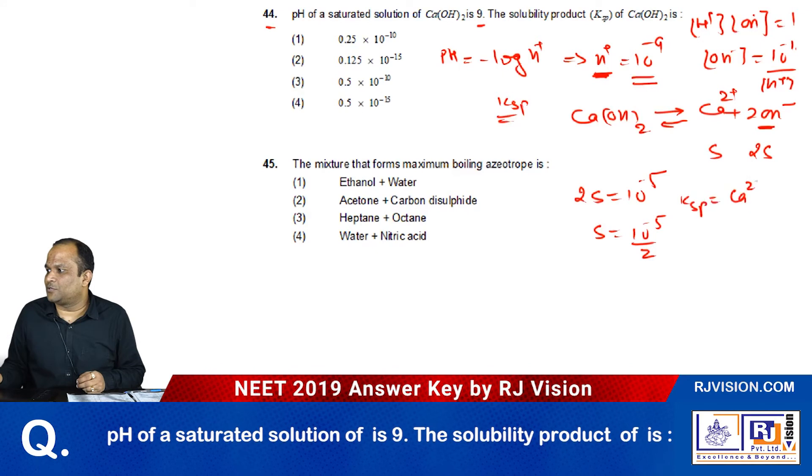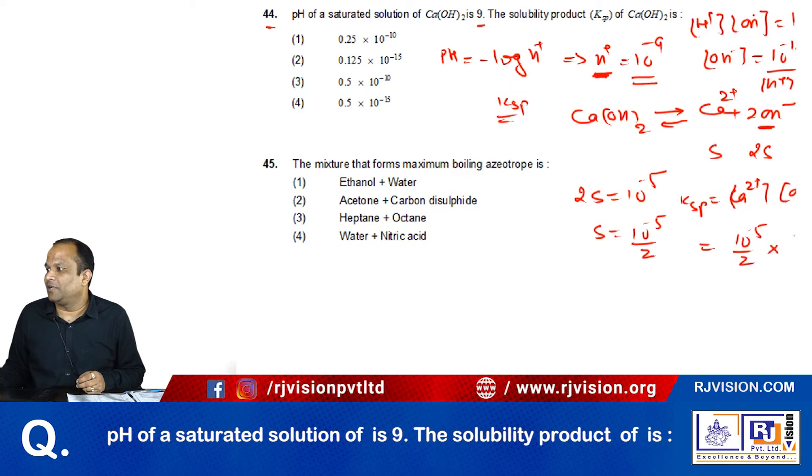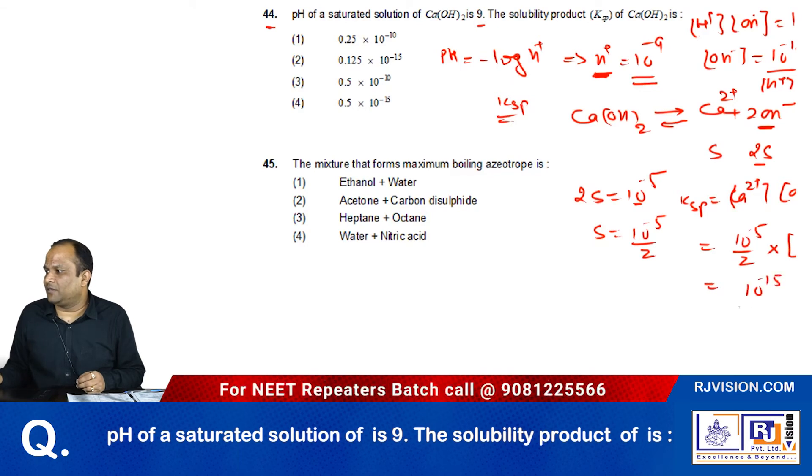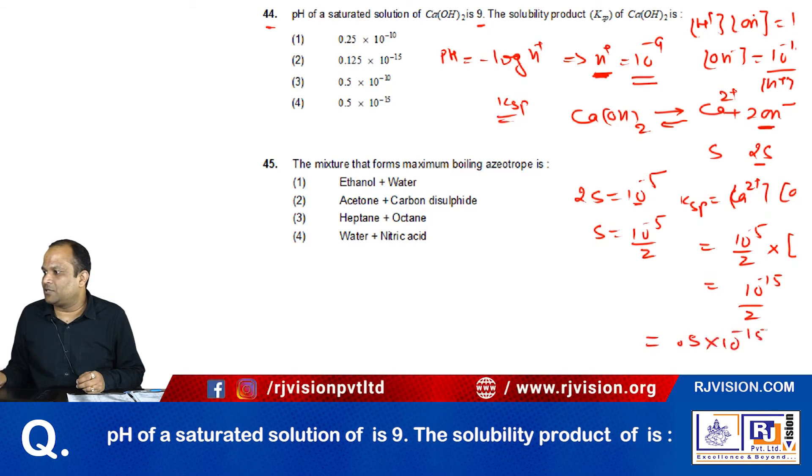Ksp equals concentration of calcium ion times concentration of OH minus ion whole square. The calcium ion is 10 raise to the power minus 5 by 2, times the OH minus which is 2S equals 10 to the power minus 5, so it is 10 raise to the power minus 5 the whole square. This is finally equal to 10 raise to the power minus 15 divided by 2, which comes out to be 0.5 times 10 raise to the power minus 15.